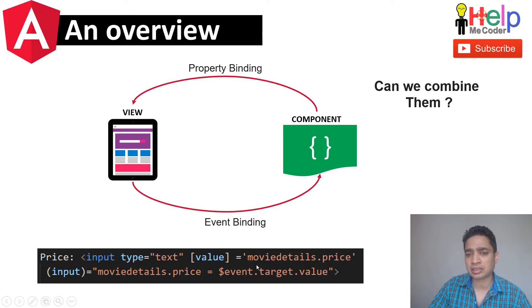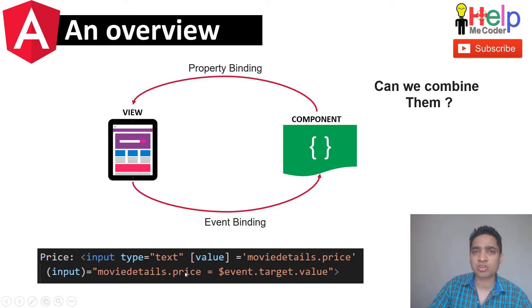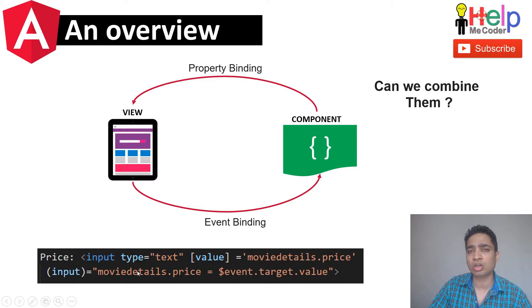This combined approach is a form of two-way binding, but the syntax is very large and has a lot of repetition — the variable is referenced twice just to transfer data back and forth. Imagine having many items on a form; doing this repeatedly would be very cumbersome. Angular has introduced a simpler syntax called ngModel to handle this.